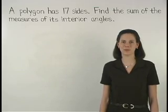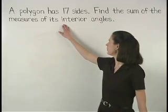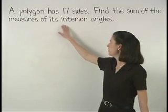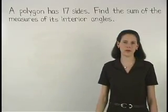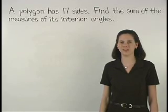In this problem, we're given that a polygon has 17 sides and we're asked to find the sum of the measures of its interior angles.